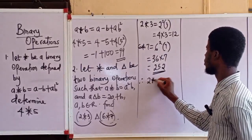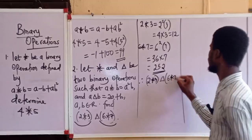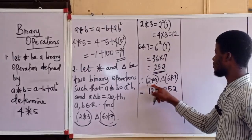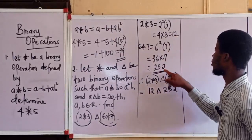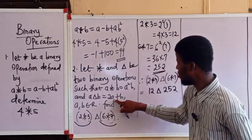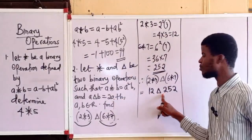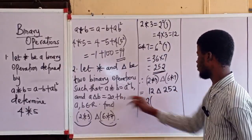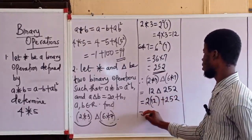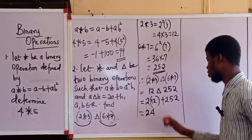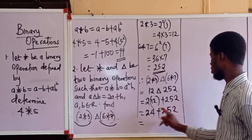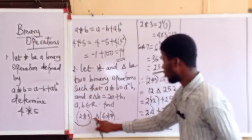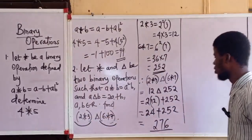So 2 operation 3, operation 6 operation 7, is equal to 12 operation 252, because we have reduced the first pair to 12 and the second pair to 252. We are now going to use the second rule of combination to evaluate 12 operation 252. With a equal to 12 and b equal to 252, we have 2 times 12 plus 252. That is 24 plus 252, which equals 276. So 2 operation 3, operation 6 operation 7, is equal to 276.